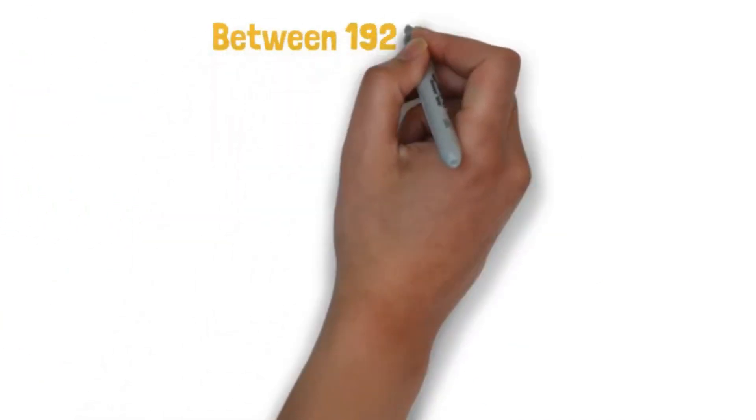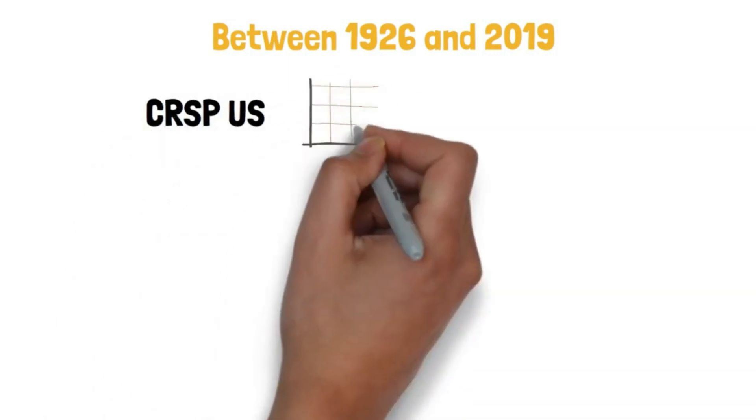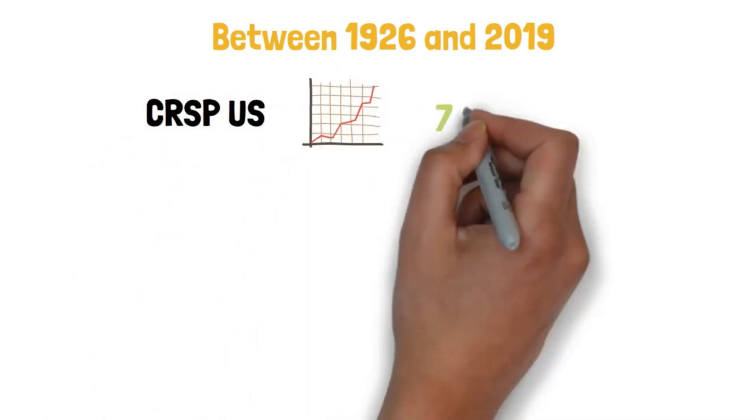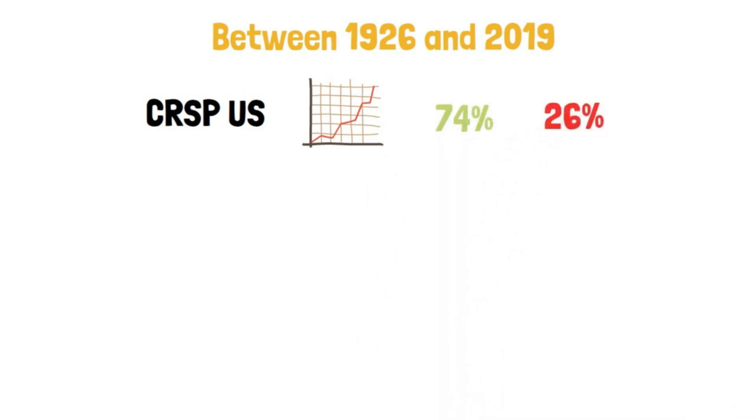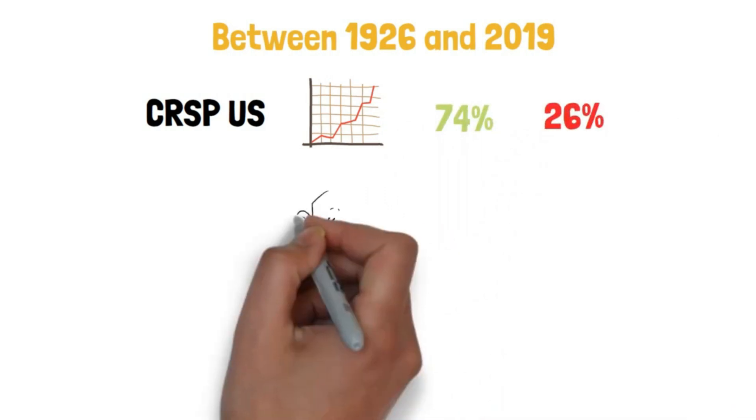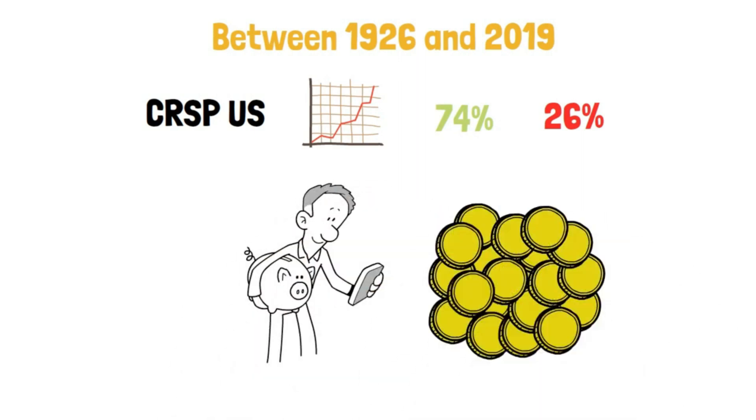Between 1926 and 2019, the CRSP US Whole Stock Market Index performed well. The market increased 74% of the time and sank 26% of the time between 1926 and 2019. Over this time span, the SIP investor who was committed to the long-term would have gained.